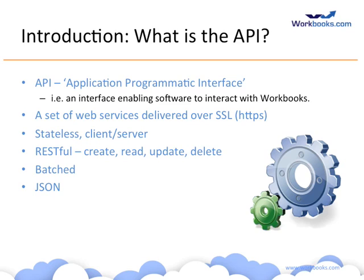The API has authentication and authorization built in so that processes and API clients have the right capabilities. It is stateless — we don't record state between requests; each request from a client results in a self-contained response from Workbooks. Operations are create, read, update, and delete. It's organized using REST principles — widespread across cloud services today — and responses are encoded using JSON (JavaScript Object Notation), which is easily consumable by JavaScript clients and parseable by many languages.